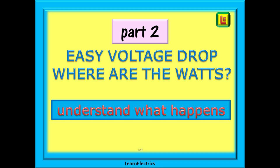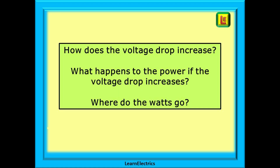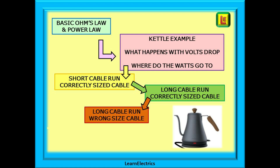This is part two of our video on simplifying voltage drop. We've been asked to explain what happens to the watts when a circuit experiences voltage drop, so in this video from Learn Electrics we will go back to basics and look at what happens to the voltage in a circuit — and just as importantly, why these things happen. We will answer: how does voltage drop increase, what happens to the power, and where do the watts go?